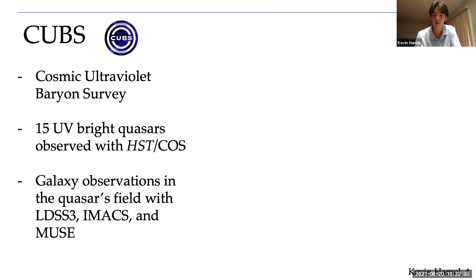First, I want to spend some time introducing the data that I'm working with. So the Cosmic Ultraviolet Baryon Survey, or CUBS for short, was designed to observe the CGM at this intermediate redshift. We have 15 UV-bright quasars that were observed with a COS spectrograph aboard Hubble. In addition to that, there is a galaxy survey that focuses on the regions close to the QSOs, and it takes advantage of the strengths of different instruments, such as LDSS-3, IMACS, and MUSE.